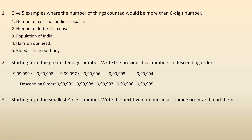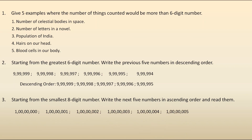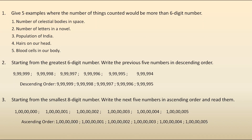The next question says: starting from the smallest 8-digit number, write the next 5 numbers in ascending order and read them. As I told before, whenever we write the smallest number, the first position is 1 and the remaining places will be 0. Here we need the smallest 8-digit number, so the first position is 1 and the remaining 7 digits are 0. So the smallest 8-digit number is 1 crore. The next 5 numbers are: 1 crore 1; 1 crore 2; 1 crore 3; 1 crore 4; 1 crore 5. This is the ascending order — smallest to greatest.